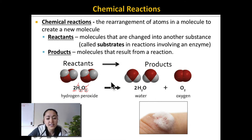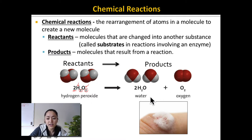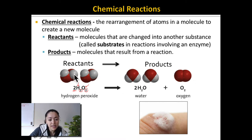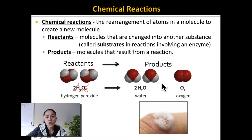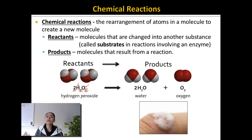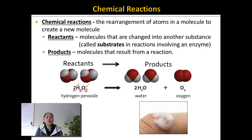Notice that there are four atoms of oxygen on the left side and four atoms of oxygen on the right side. And if you add up the atoms of hydrogen, there are four on each side too. We haven't added or removed any atoms. All we've done to create these different molecules is rearrange how these atoms are arranged together. This is a simple chemical reaction.